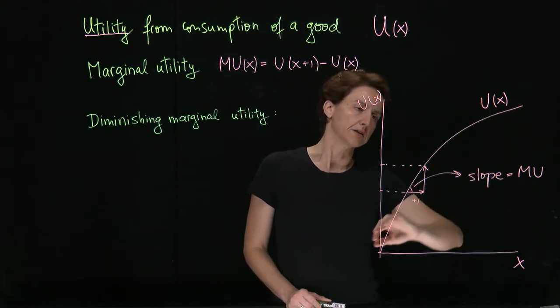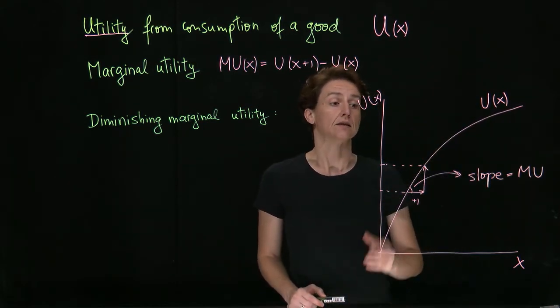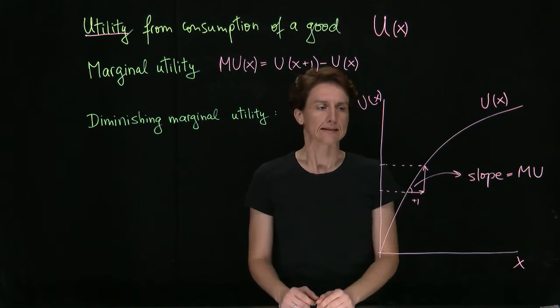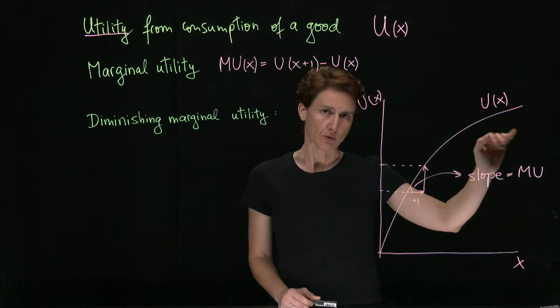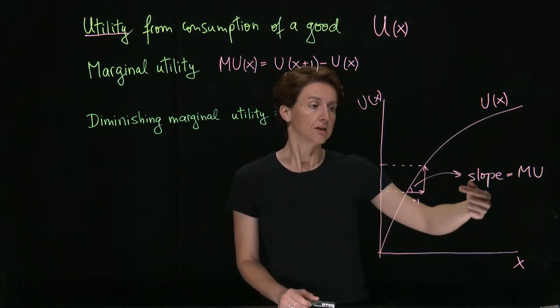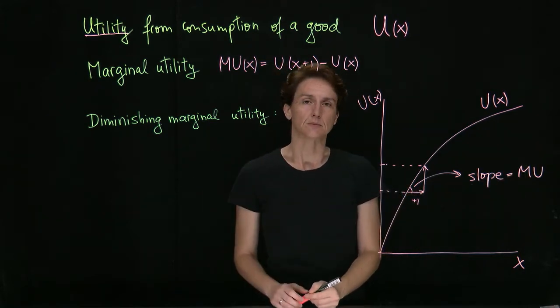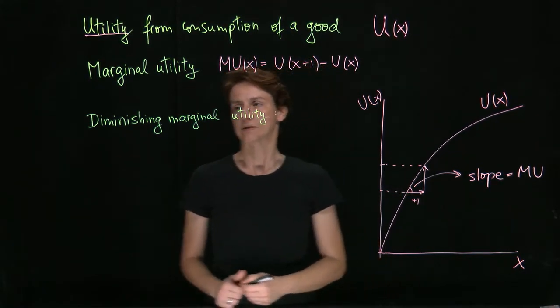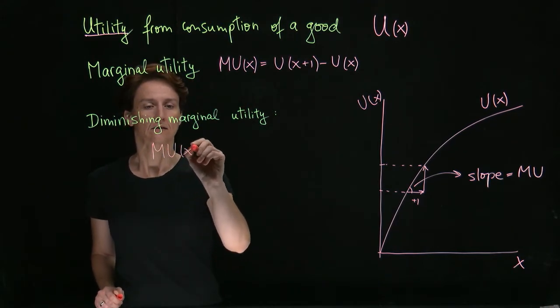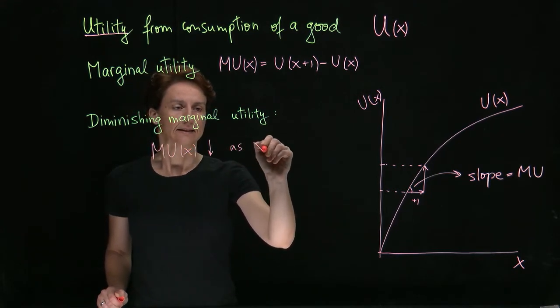Now, if you're wondering how come I drew the function this way, it turns out that this pattern is a typical one. So we expect that as you consume more and more of a good at the margin, meaning with every extra unit, utility will increase more and more slowly. And that is the law of diminishing marginal utility. It simply says that mu of x decreases as x increases.